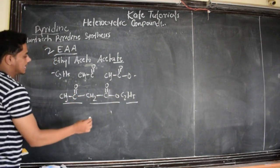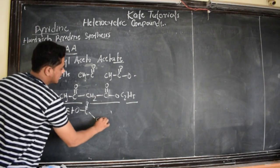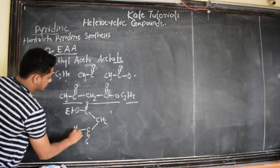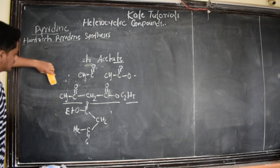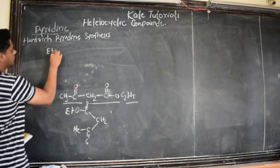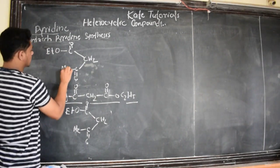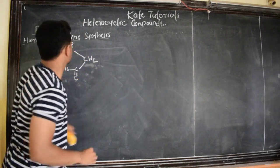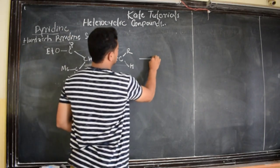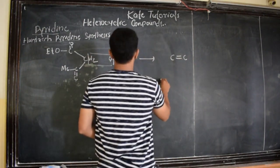Let me write EAA as: Et-O-CO-CH2-CO-CH3 (ethyl acetoacetate). Also, we can see that these two hydrogens on the alpha carbon are acidic in nature, because they are attached to a carbon which is sp3-hybridized between two carbonyl groups, and there will be resonance — this resonance is nothing but tautomerism. I will explain that in another class.